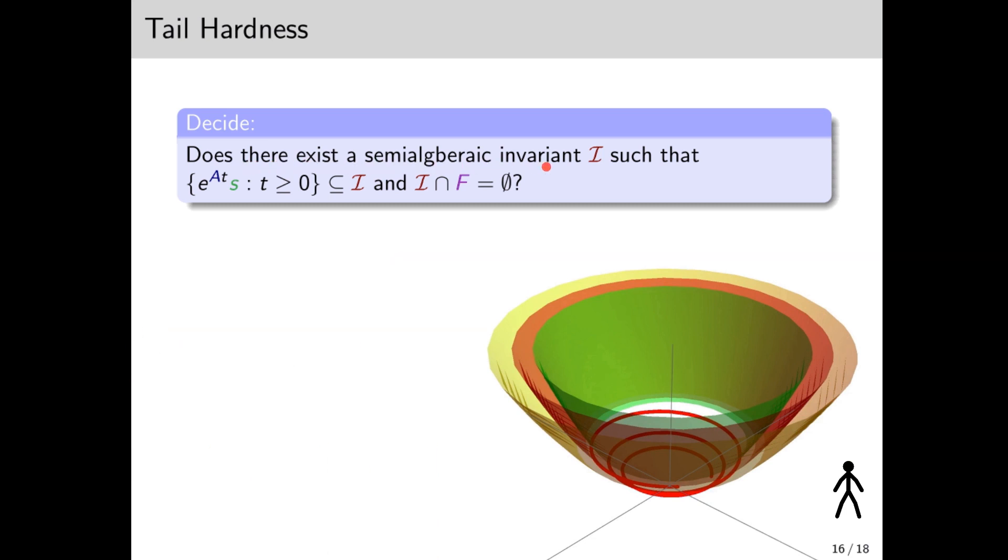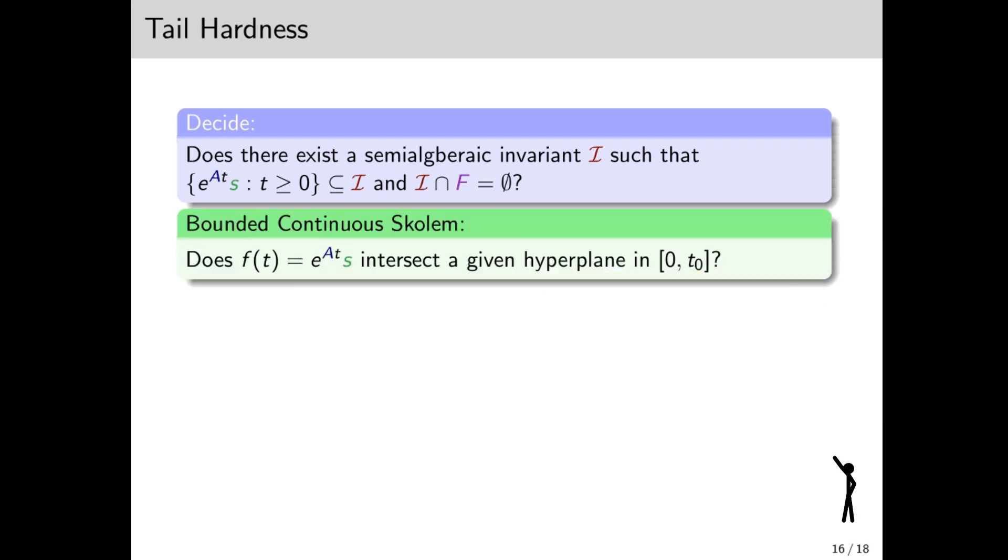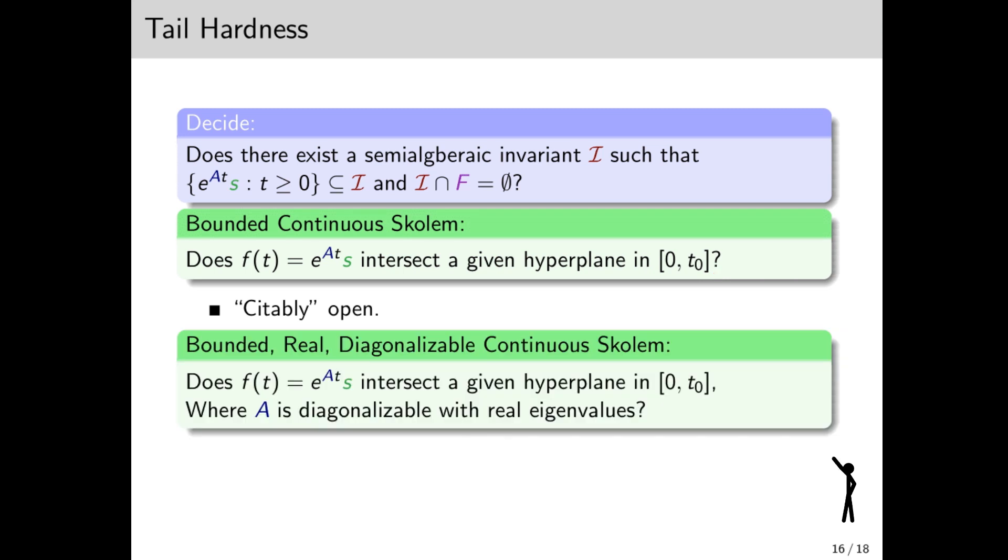As we now show, deciding whether there is a semi-algebraic invariant that contains the entire orbit is hard, with respect to a certain open problem in transcendental number theory. Before describing this hard problem, I'll introduce the bounded continuous Skolem problem, which is a famous problem whose decidability is open. It asks whether e^(At)s has a zero in a bounded interval. We don't quite have a reduction from its general form, but from a restricted one, in which A is diagonalizable with only real eigenvalues. This is also an open problem, but it hasn't been mentioned explicitly. However, there is good evidence that it is at the core hardness of the general case.